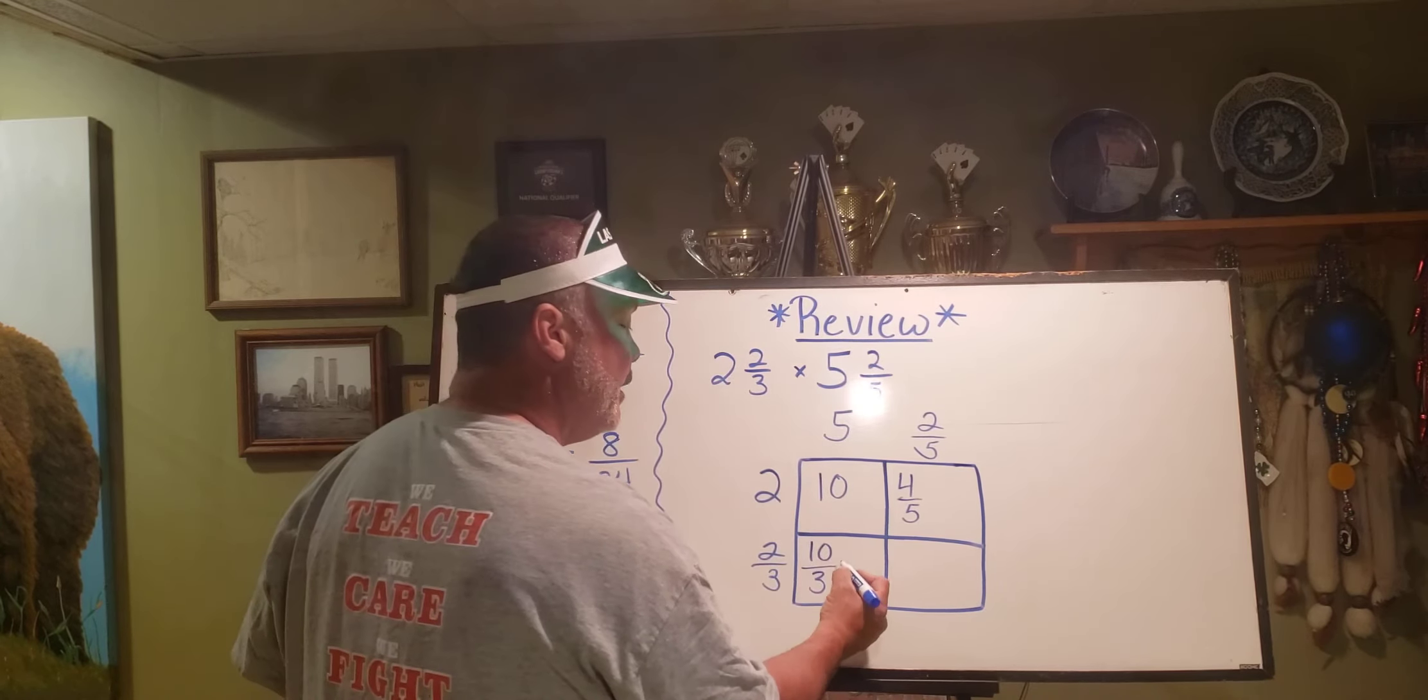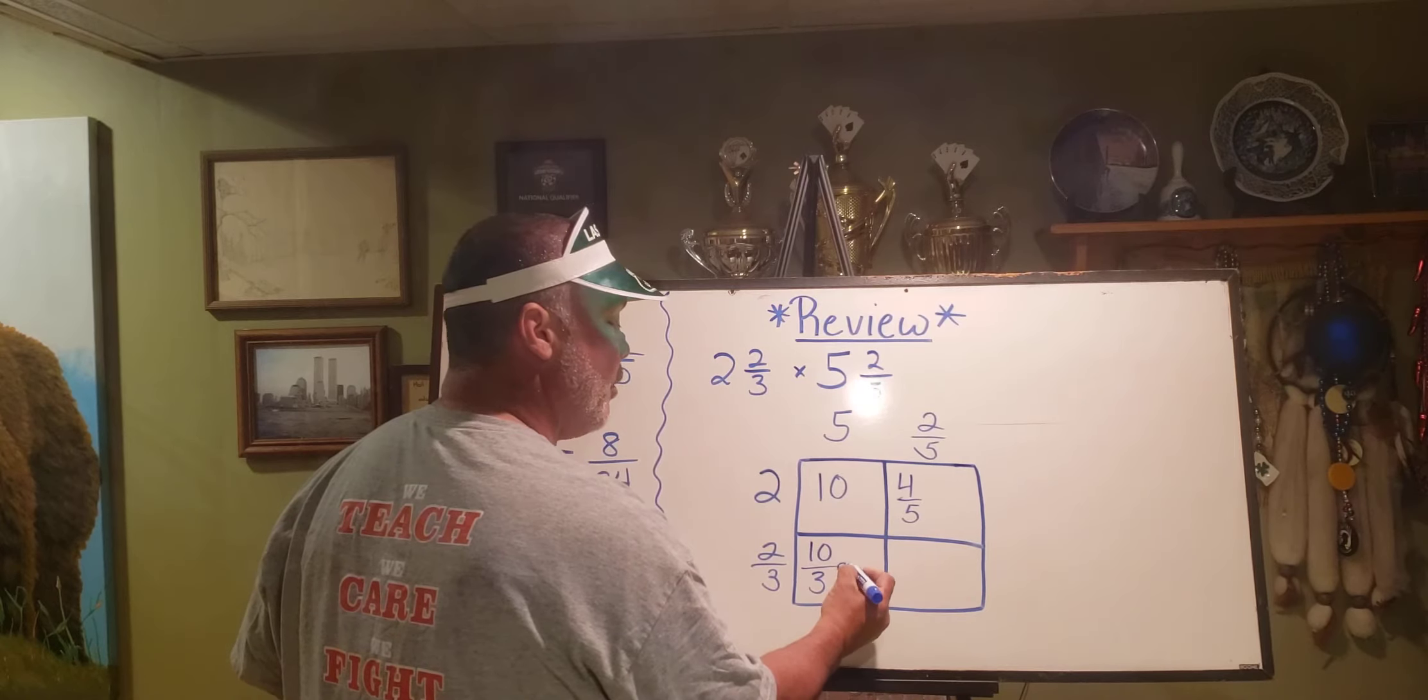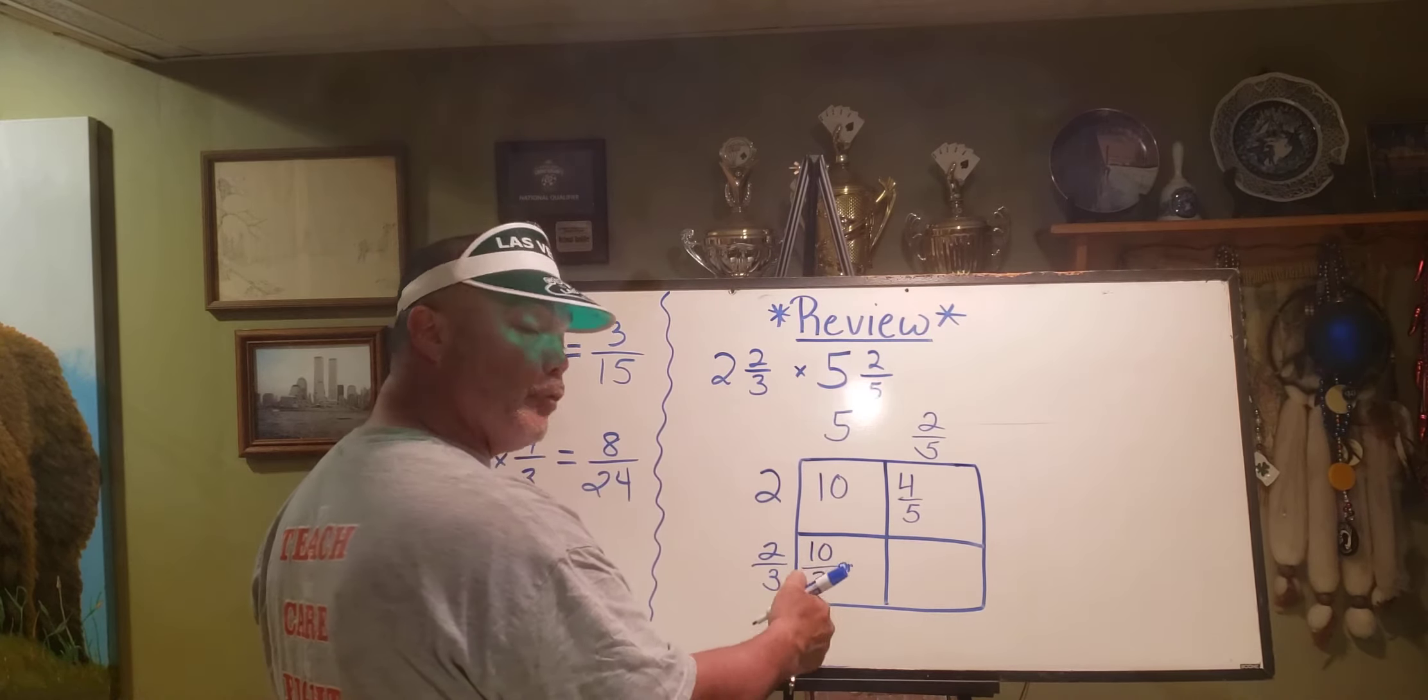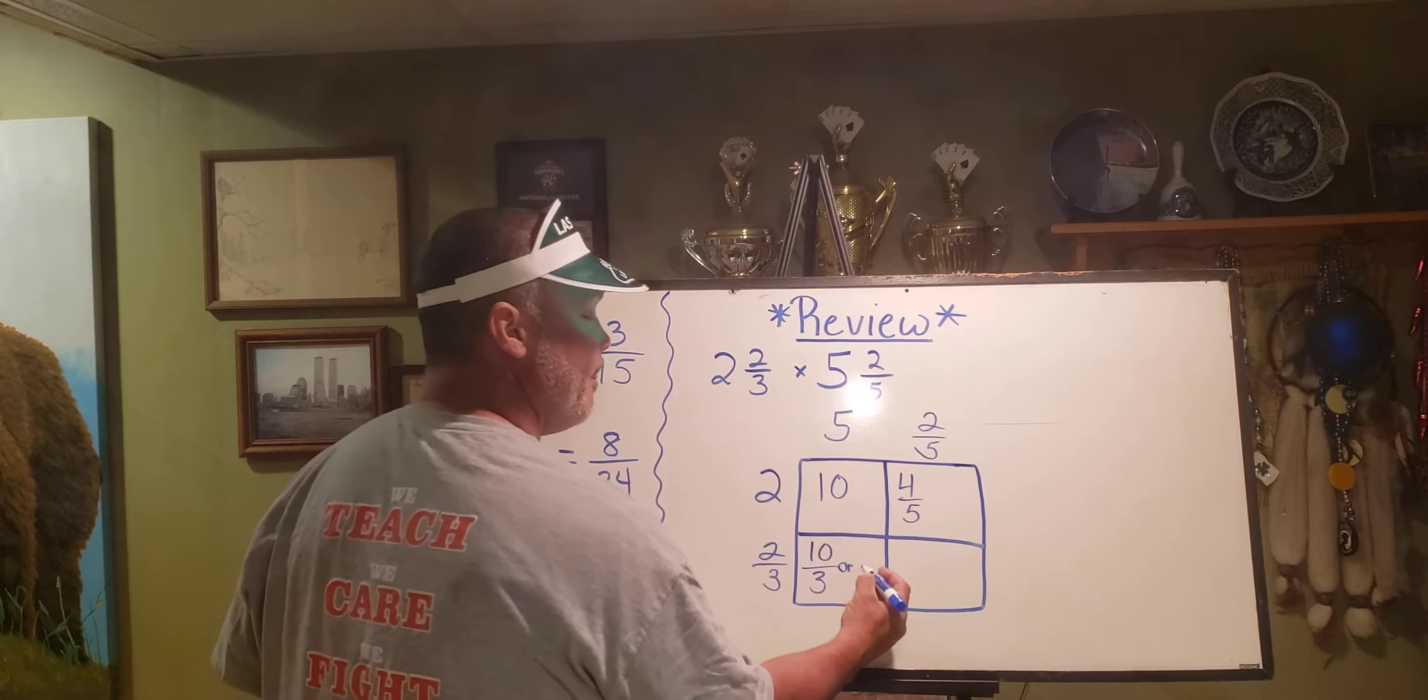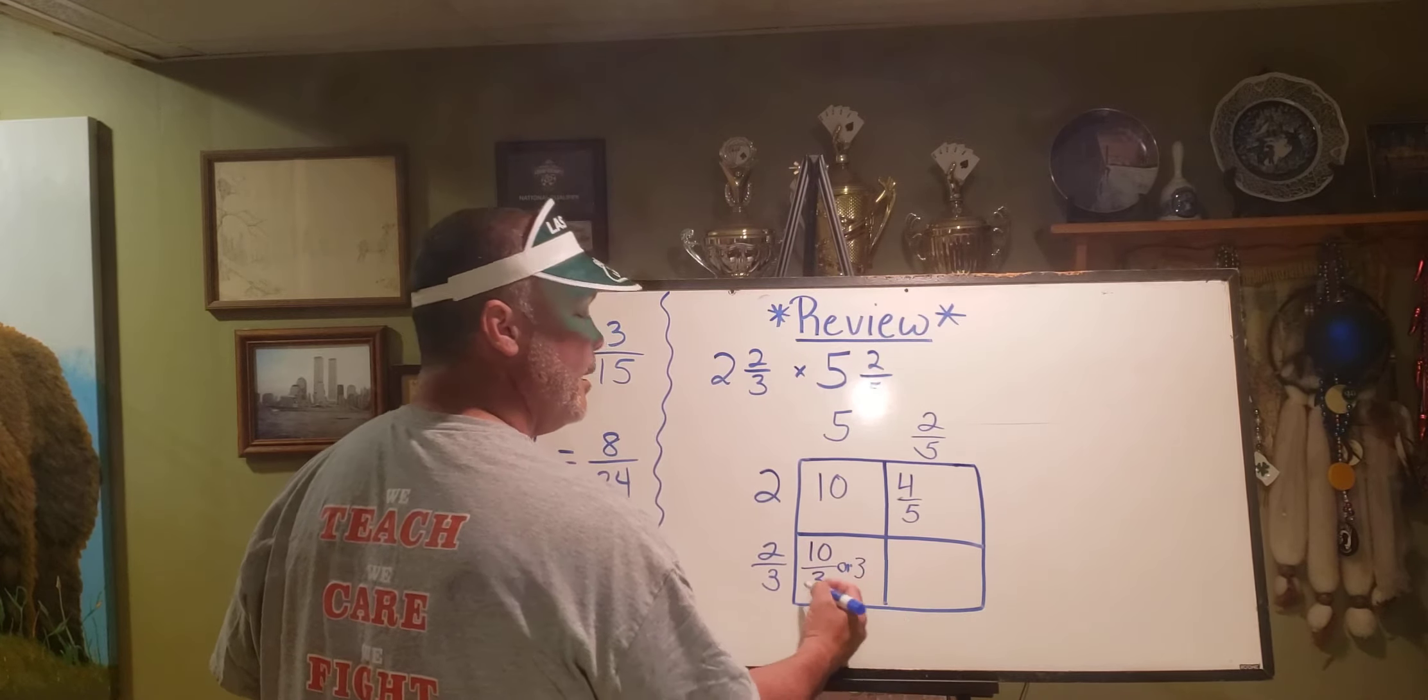Giving me an improper fraction, which I want to convert. And I know, I'll put 'or' here, and I can pull out three groups of three from ten, which would be three and one third.